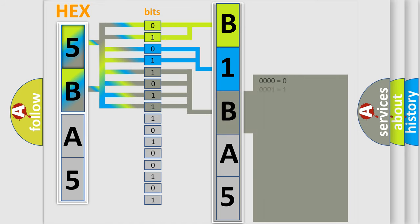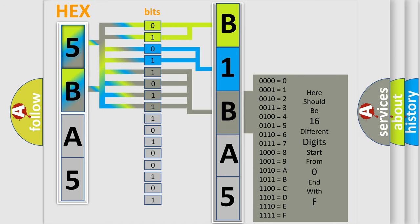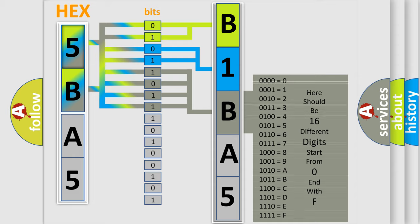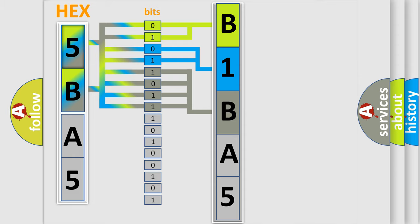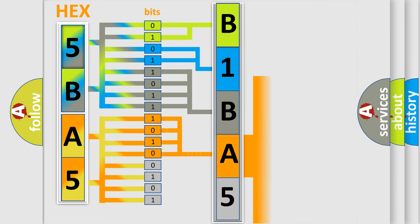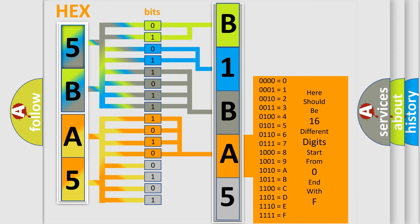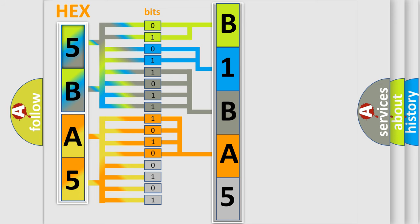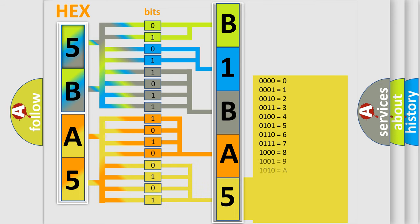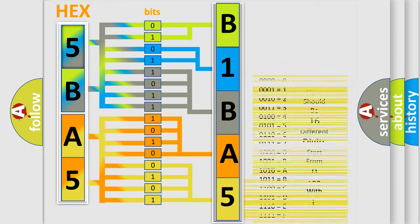The second byte is composed of a combination of eight bits. The first four bits determine the fourth character of the code, and the combination of the last four bits defines the fifth character. A single byte conceals 256 possible combinations.